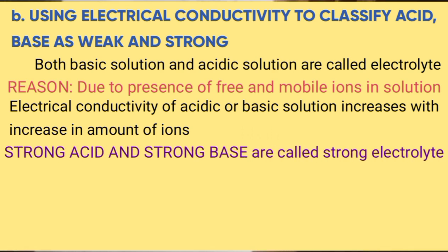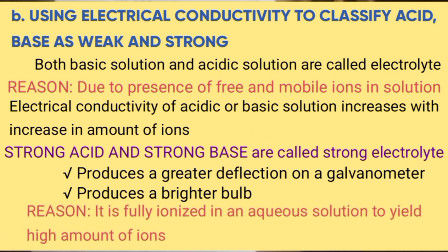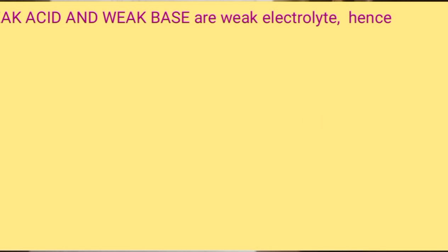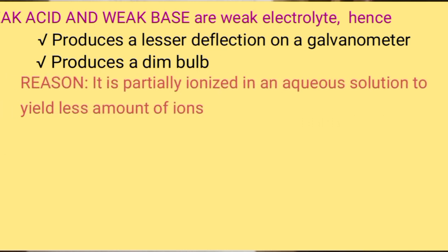Strong acid and strong base are called strong electrolytes, hence producing greater deflection on a galvanometer or producing a brighter bulb, because they are fully ionised in solution. A weak acid and a weak base are called weak electrolytes, hence producing less deflection on a galvanometer or producing a dim bulb, because they are partially ionized in solution to yield a lesser amount of ions.